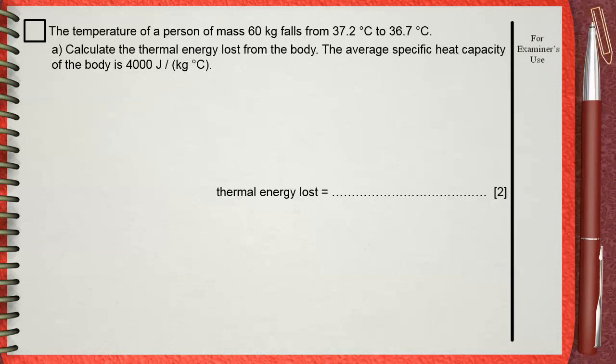The temperature of a person of mass 60 kilograms falls from 37.2 degrees Celsius to 36.7 degrees Celsius. Calculate the thermal energy lost from the body. The average specific heat capacity of the body is 4000 joules per kilogram times degrees Celsius.